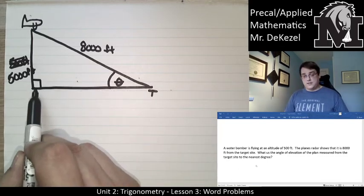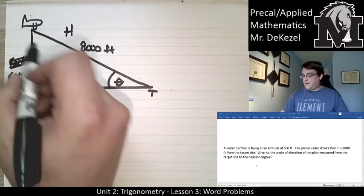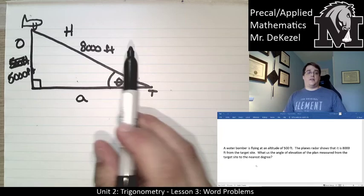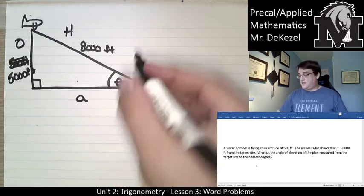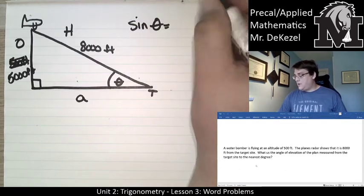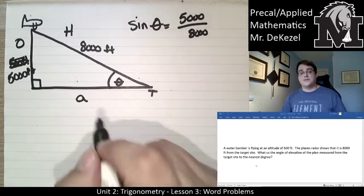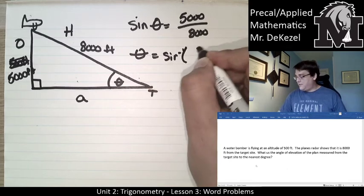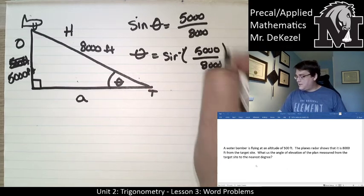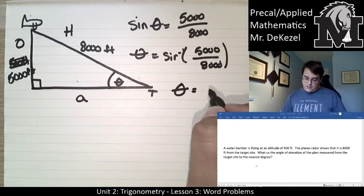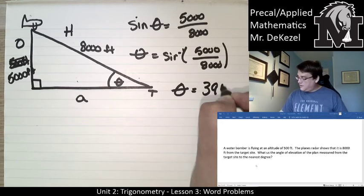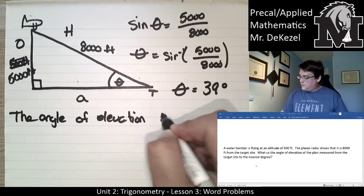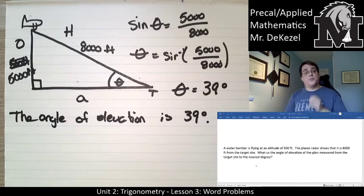The 90-degree angle means the line from the plane to the ground is the hypotenuse. Opposite the angle of interest is the altitude (5,000 ft), and the adjacent side is at the base. We're using opposite and hypotenuse, which is sine. Sin(θ) = 5,000/8,000, so θ = sin⁻¹(5000/8000), giving θ = 39 degrees. The angle of elevation is 39 degrees.